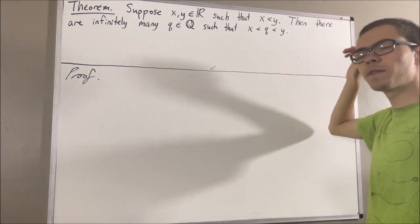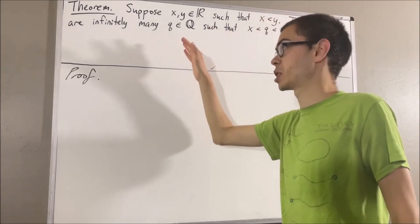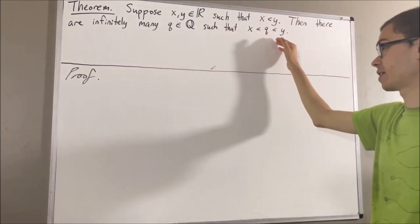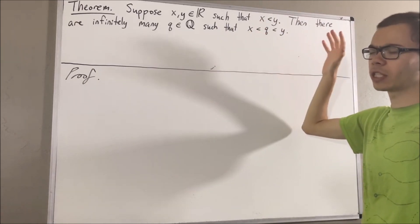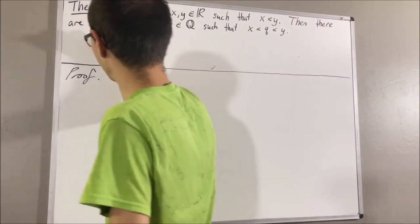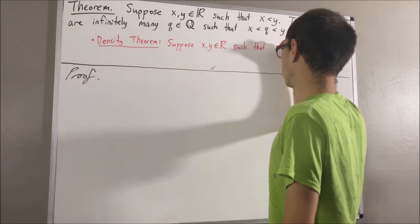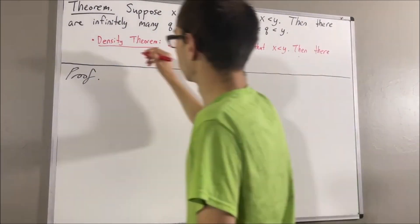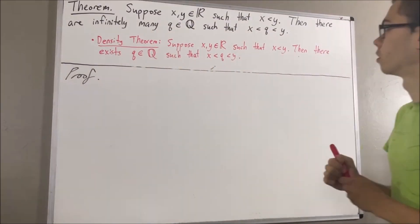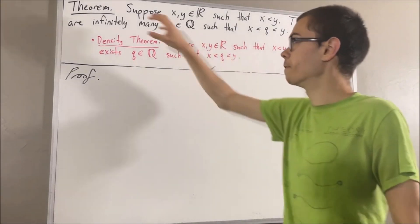We have already shown that there exists a rational number q such that x is less than q is less than y. This is often referred to as the density theorem. We're going to use this fact in order to prove this theorem.